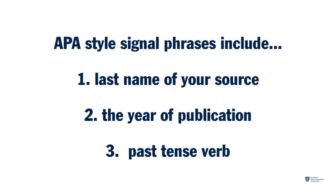APA style signal phrases give the last name of your source, followed by the year of publication in parentheses, and a past tense verb which gives context to the borrowed information. MLA style is similar, however it uses a present tense verb.